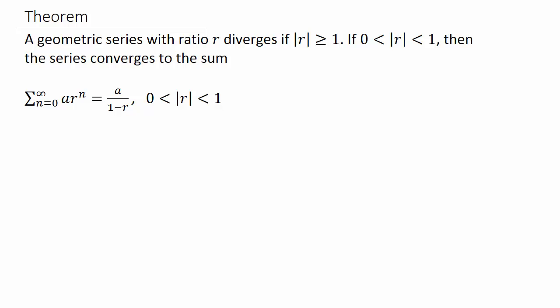Here we have a theorem. It says a geometric series with ratio R diverges if the absolute value of R is greater than or equal to one.